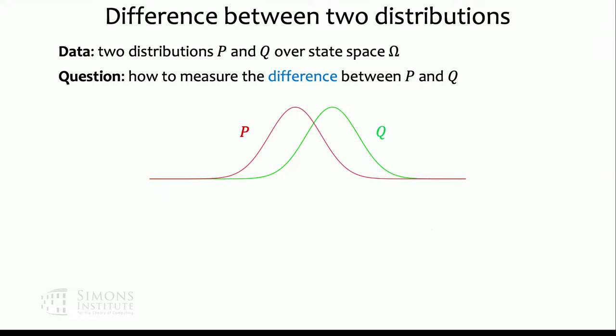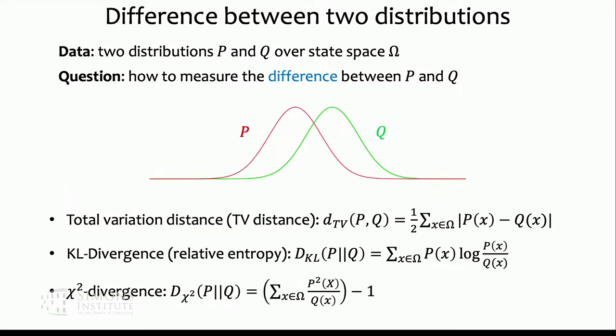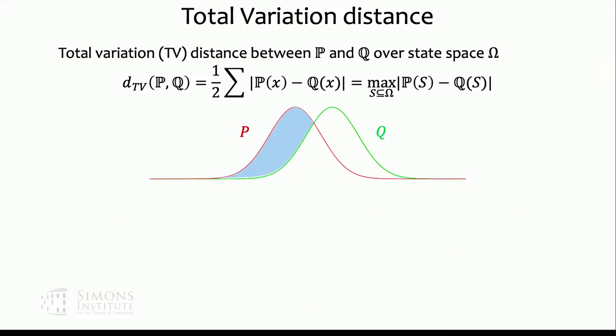The problem is that suppose we are given two discrete distributions, p and q, over a finite domain omega. A natural question is how to measure the difference between two probability distributions. There are many standard notions to estimate the differences — for example, the total variation distance, KL divergence, and other divergences. In this talk, we focus on the total variation distance. Given two distributions p and q, their total variation distance is: enumerate all possible x from domain omega, look at the probability of x in p and in q, take their difference, sum over all x, and divide by two.